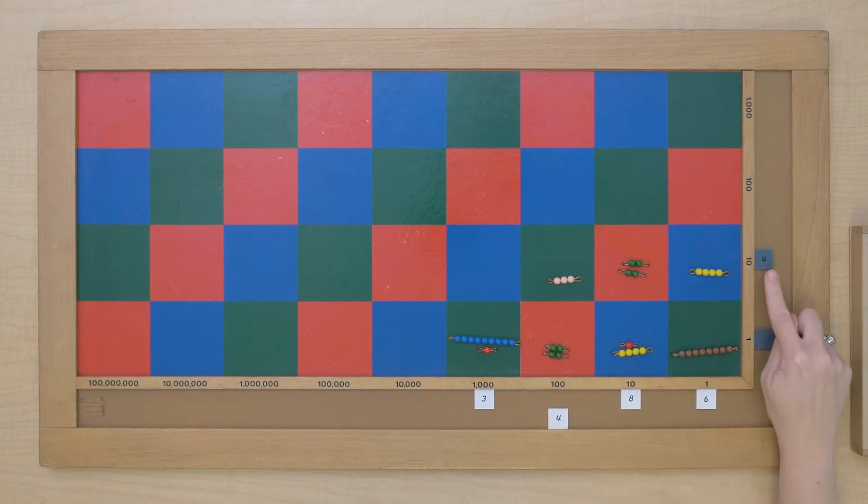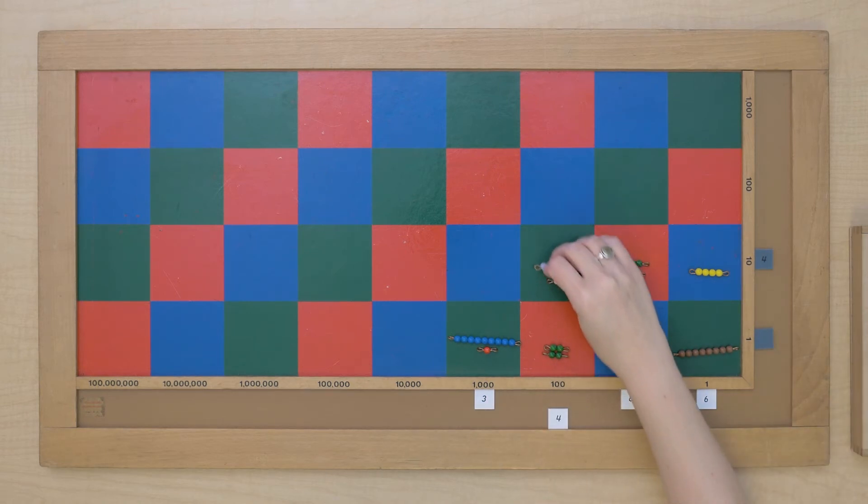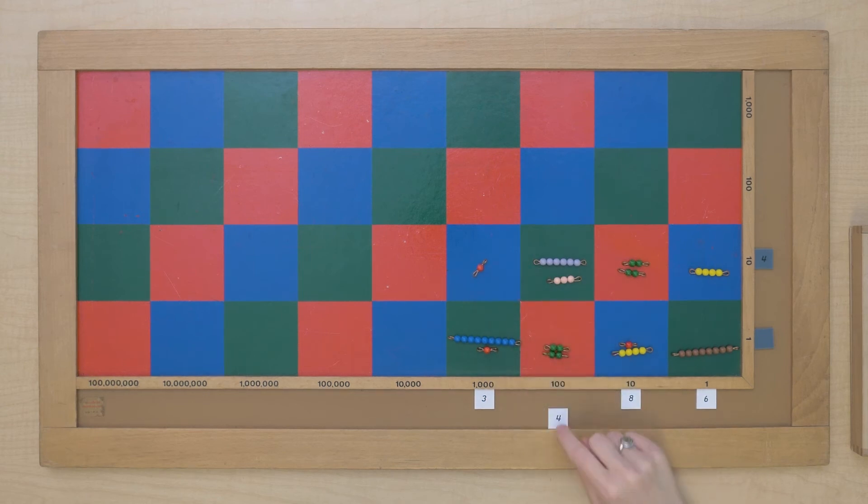4 hundreds times 4 tens. Well, 4 times 4 is 16. And we have 16,000. So there's our 16,000.